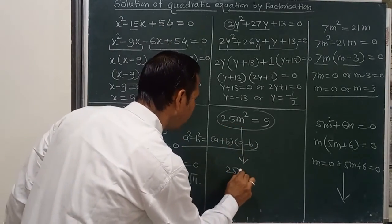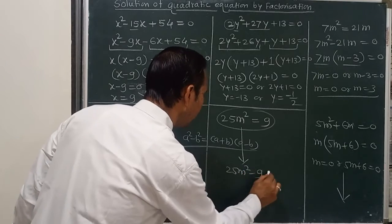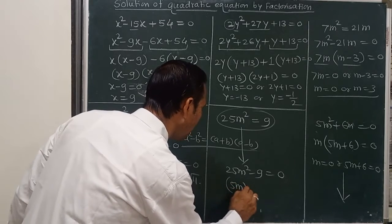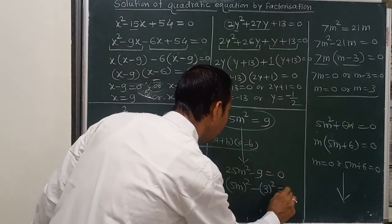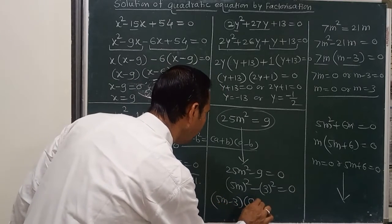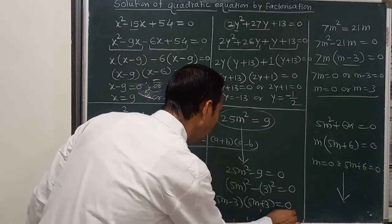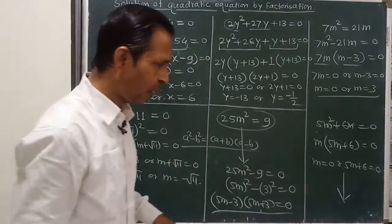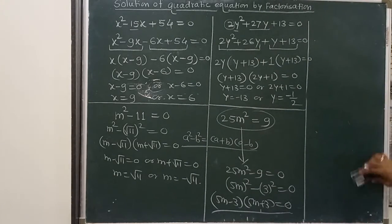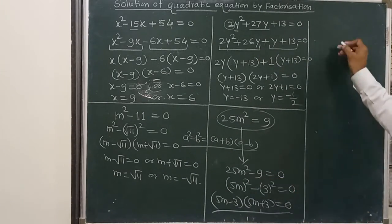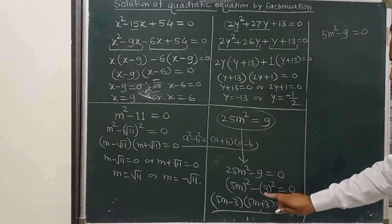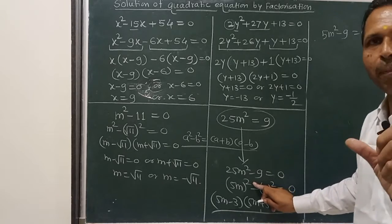Another example: 25m squared minus 9 equals 0. This follows the same difference of squares approach. Here 25 is 5m squared and 9 is 3 squared, so we apply the a squared minus b squared factoring pattern. If we don't recognize this pattern, we can also rearrange: 25m squared equals 9, so m squared equals 9 over 25.